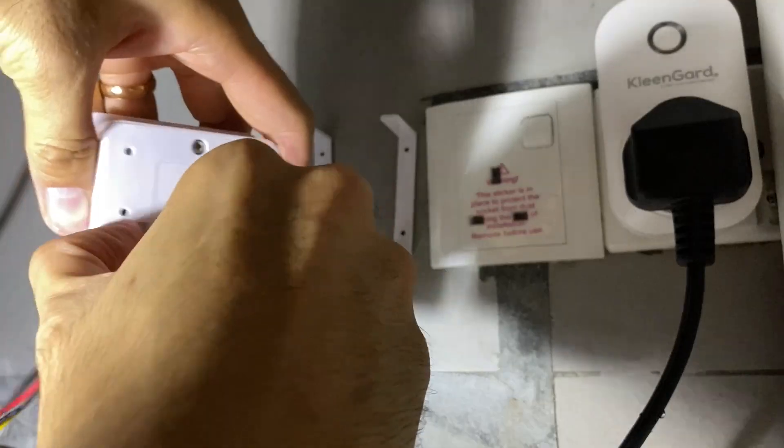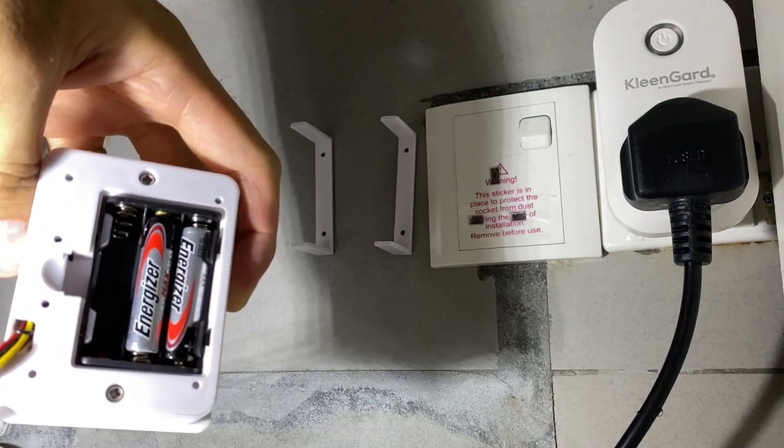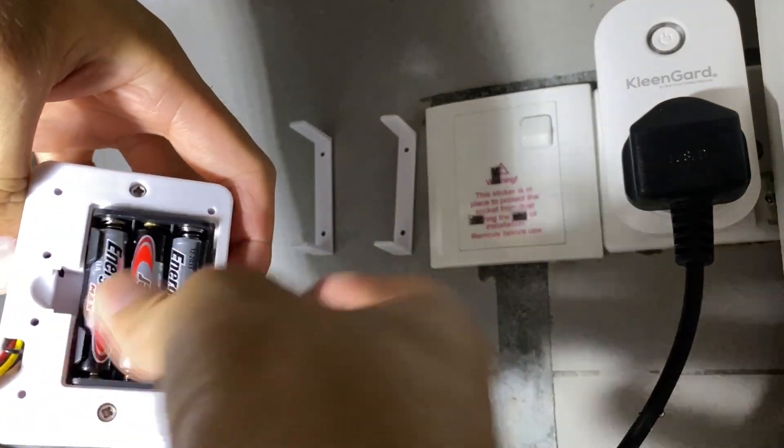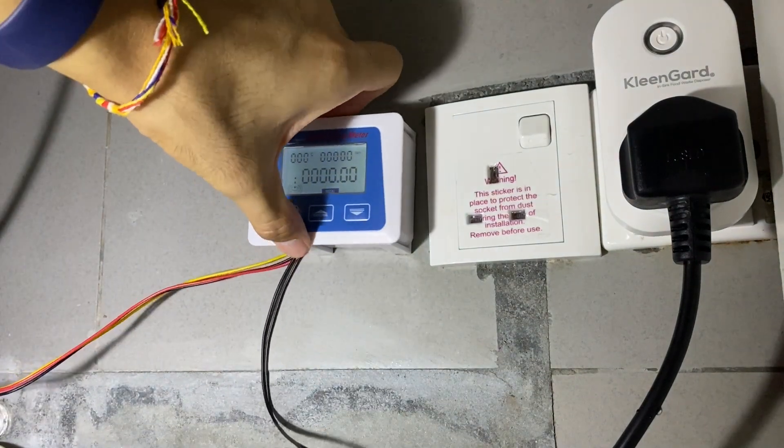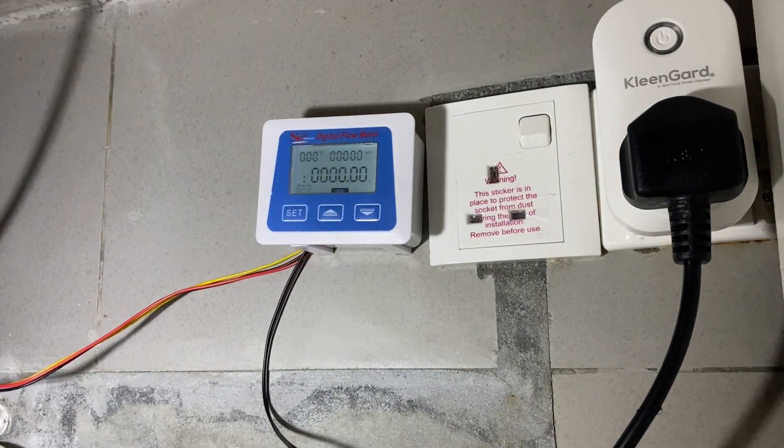So I will need a flow meter, a drinking water flow meter. It's powered by three AAA batteries, and you may choose the DC power version, but I choose the battery version.